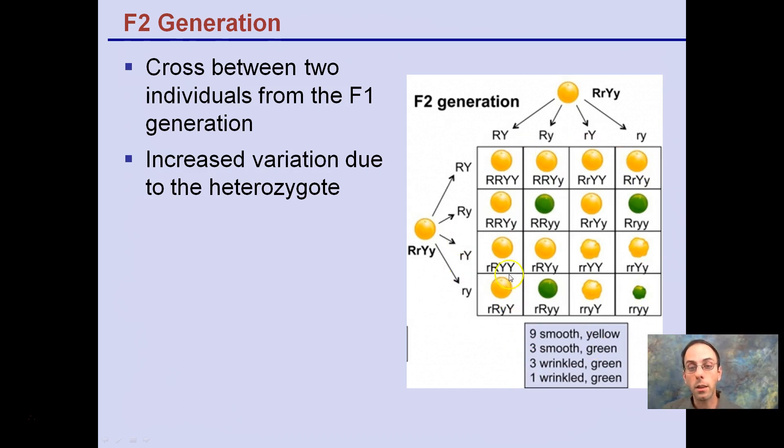Again remember that yellow is dominant so it's smooth. Rough and green would be the recessive. We see one individual here from these two heterozygotes would be that rough and that green color.